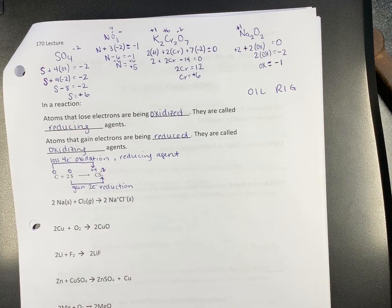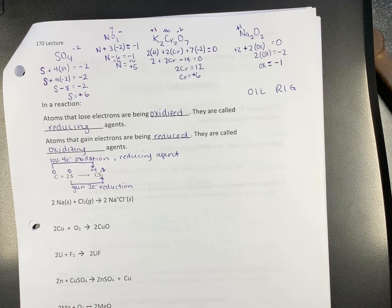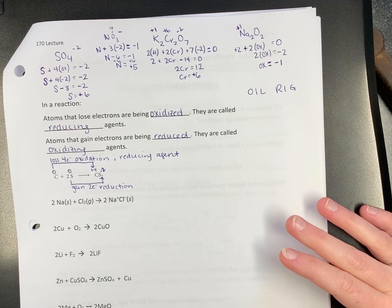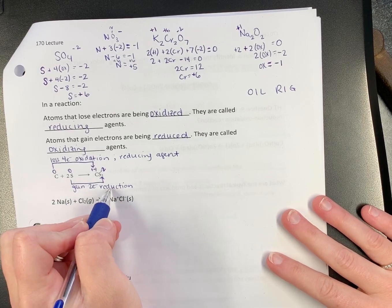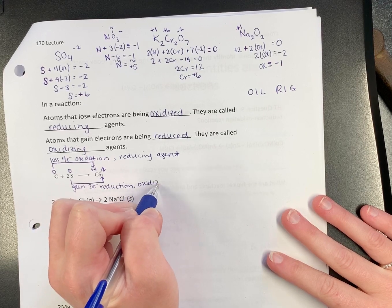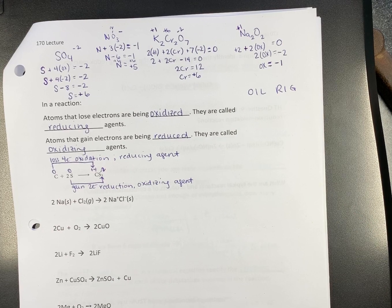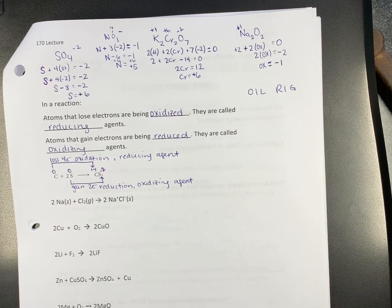It's called reduction because it goes from zero to negative two. So the number is being reduced in value. It's becoming more negative. I don't like that notation, but that's why somebody decided that should be reduction. I have no good reason why they call it oxidation. Other than I just had to learn it. So if this is reduction, that makes it the oxidizing agent.